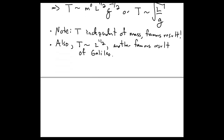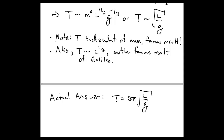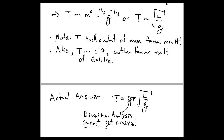How does this compare with the actual answer for the period of a pendulum? The actual period is 2π times the square root of the length over the gravitational acceleration. Notice we couldn't get that factor of 2π from dimensional analysis — and this is true in general. Dimensional analysis cannot give us these numerical factors.